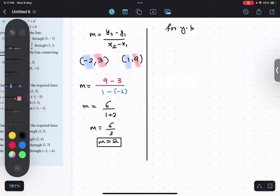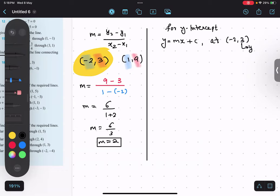For y-intercept, y equals mx plus c—I forgot to write x. At any one point, I can take either the first point or the second point. You tell me which point I should take. Take the first one? Okay, let's take the first point at (-2, 3). What I'm going to do is substitute all three values. My y value here is 3. Y value is 3 equals to